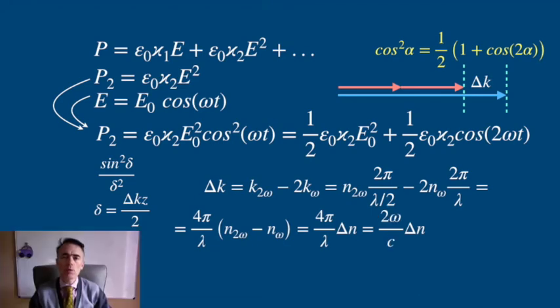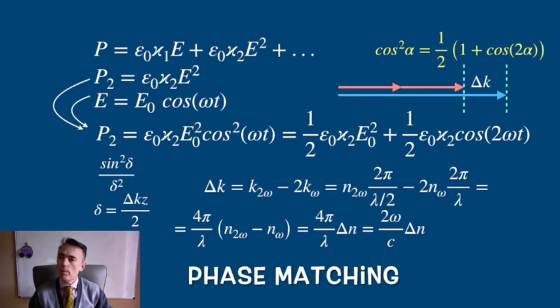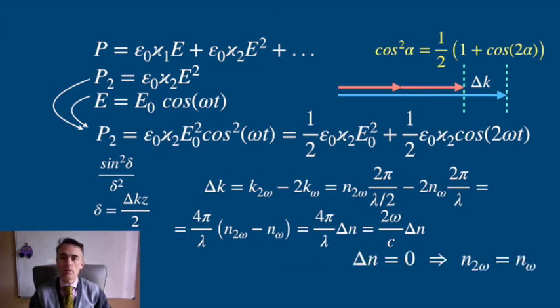But this process is phase sensitive. This means that it will be produced depending on the relative phases of the incoming fundamental photons. We call it phase matching when Δn is 0, when the index of refraction of both waves is the same, so that both travel at the same speed. This might depend on the angle too.